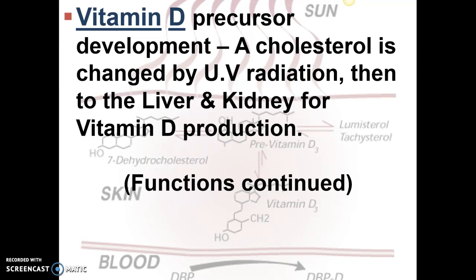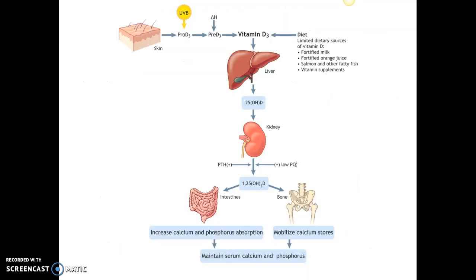Calcium absorption is very difficult without the use of vitamin D — it pretty much opens the door and lets calcium in. Ultraviolet radiation penetrates through the upper layers of the skin and the superficial blood vessels, changing the precursor to vitamin D3. The liver and kidney then modify it, helping calcium and phosphorus absorption in the intestines and moving calcium into the bones for storage.